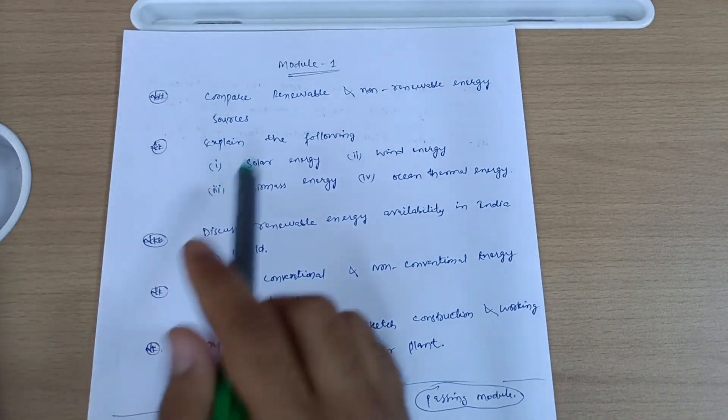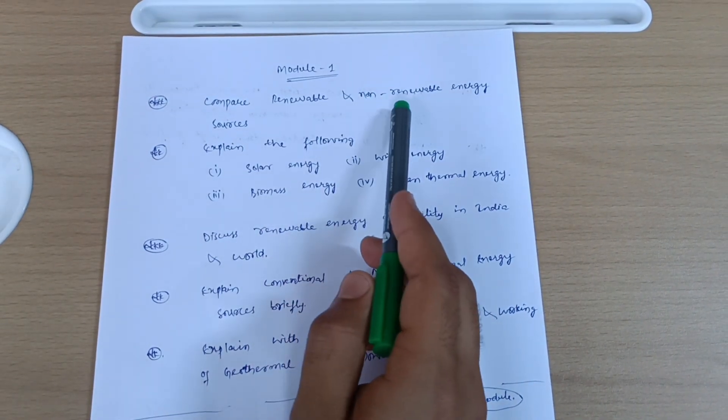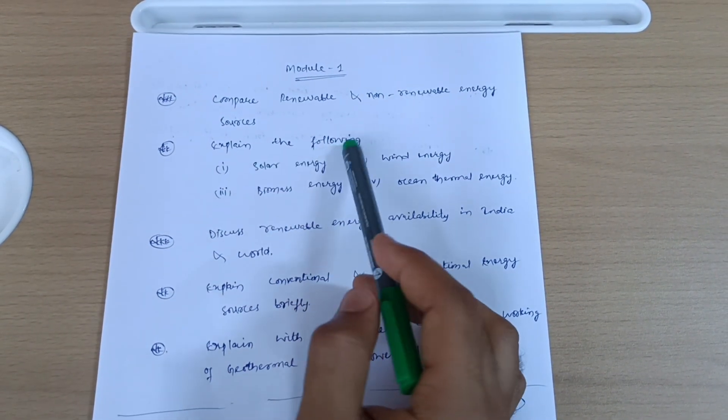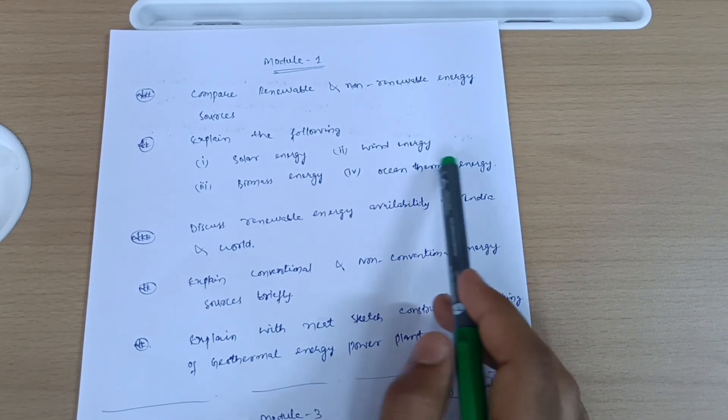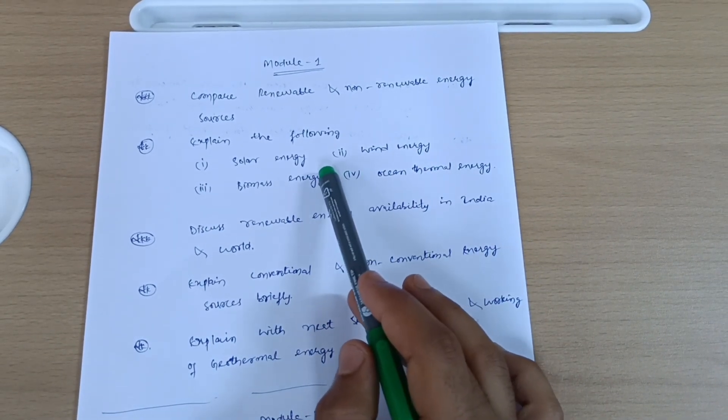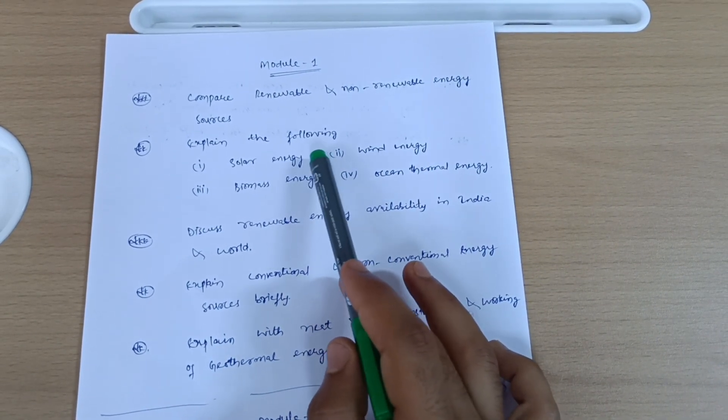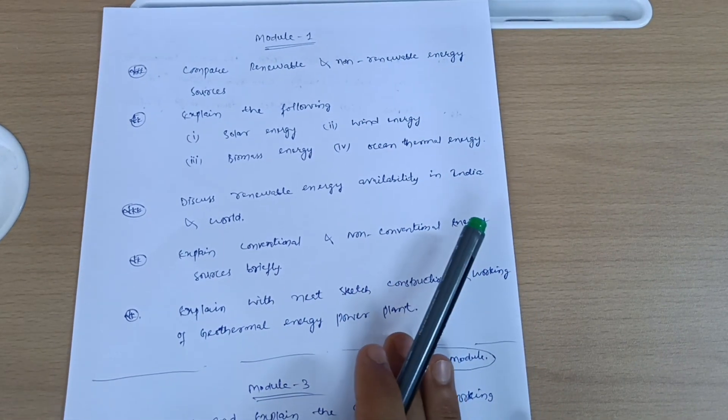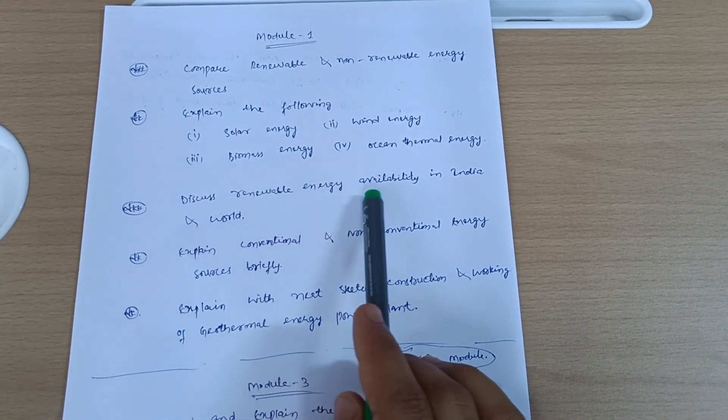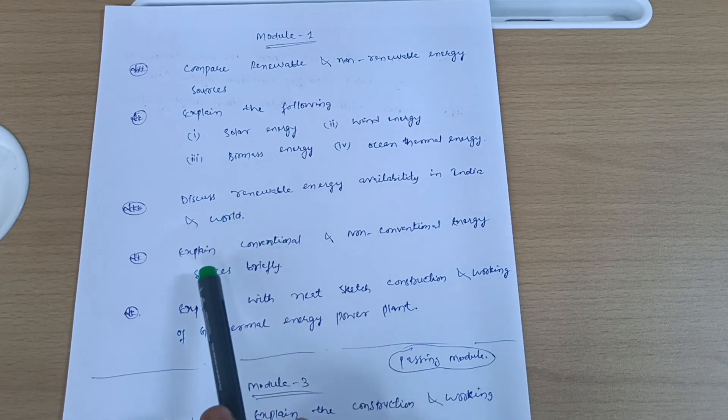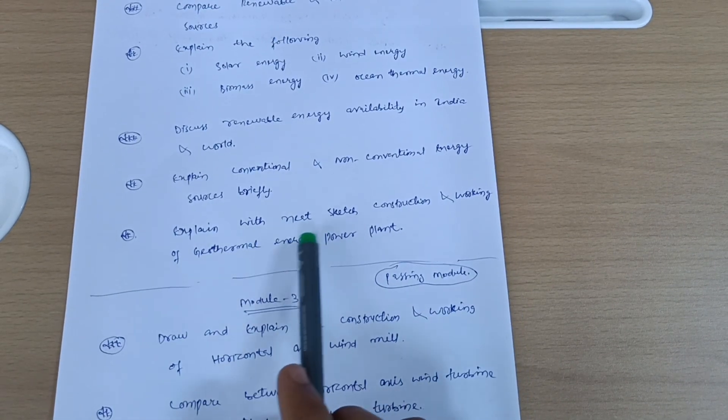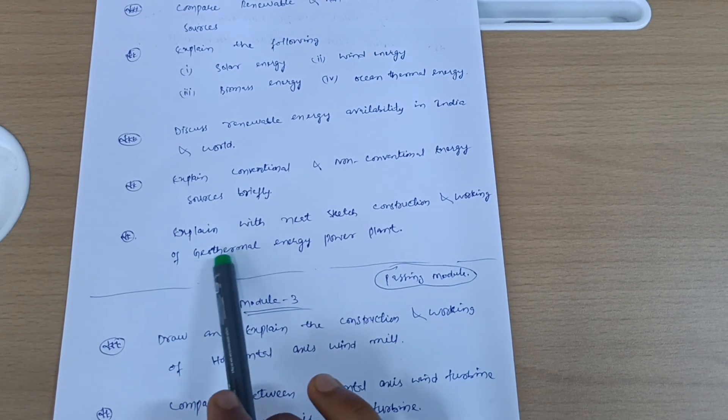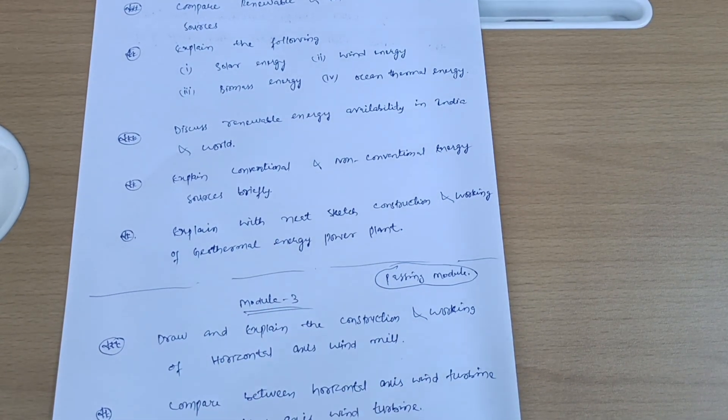Now let me discuss Module 1. Compare renewable and non-renewable energy sources. Explain the following: solar energy, wind energy, biomass energy, and ocean thermal energy. You should keep applications of these topics in your mind. They may ask you sometimes applications also. Discuss renewable energy availability in India and world. Expand conventional and non-conventional energy sources. Briefly explain with neat sketch construction and working of geothermal energy power plant.